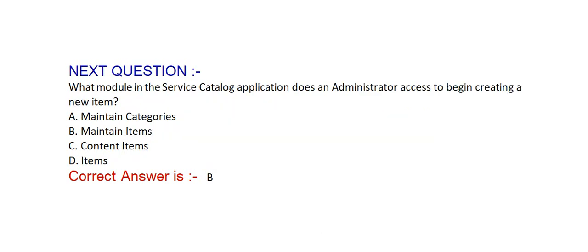Next question: What module in the service catalog application does an administrator access to begin creating a new item? Option A: maintain categories. Option B: maintain items. Option C: content items. Option D: items. Correct answer is Option B, maintain items.